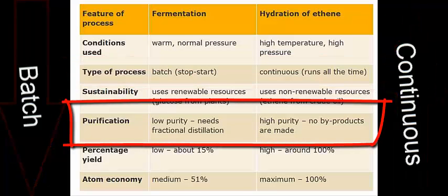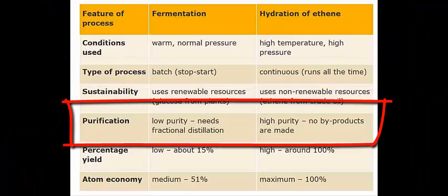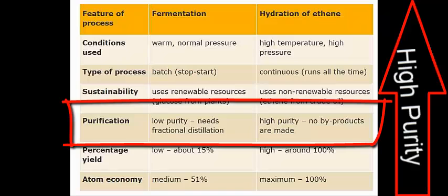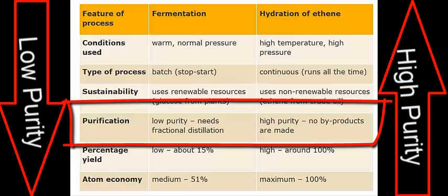This leads us to purification. With the hydration of ethene, a very pure product is produced with no by-products. Compare this to fermentation, which is very low purity — the ethanol produced is roughly only 15% of the total volume of liquids. Therefore, fractional distillation must take place to remove the ethanol which has been produced.